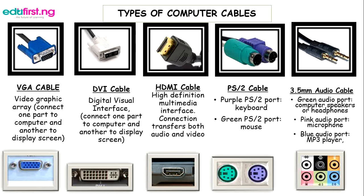The PS2 cable — the purple port is for the keyboard and the green port is for the mouse. It is found in old system units but has nowadays been replaced by USB. The 3.5mm audio cable is found at the back of system units in different color codes: the green audio port is for computer speakers or headphones, the pink port is for microphone, and the blue port is for an MP3 player — similar to what you have with your earpiece when connecting to your phone.